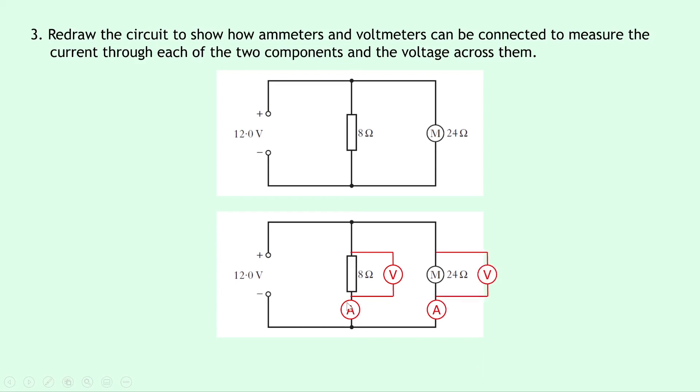Again, what we could do here is label the ammeters and the voltmeters to be A1, A2, and V1 and V2 just to make them different, but it doesn't really matter for this example. And as I said earlier, equally you could have the ammeters placed above the components, and we could also have the voltmeters drawn out to the left instead.